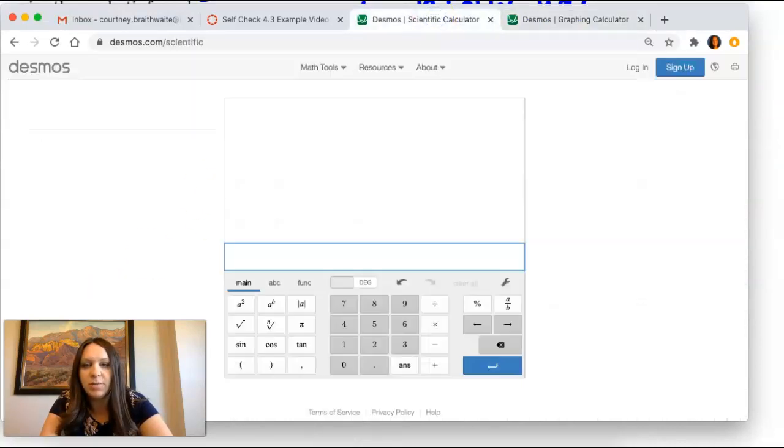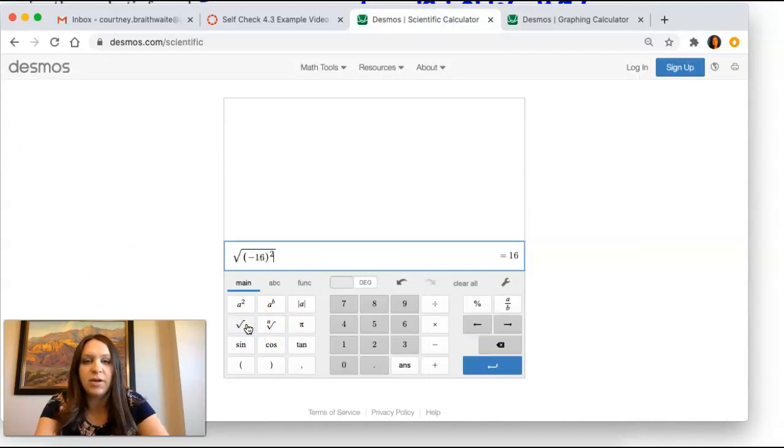So I'm going to go to Desmos. I have the square root of negative 16 squared, minus 4, times a, which is 1, times c, which is 64.